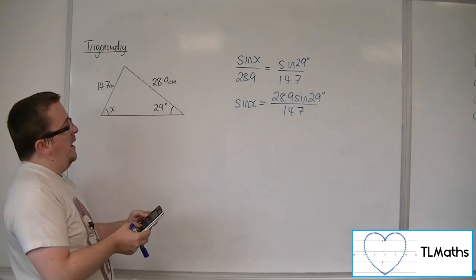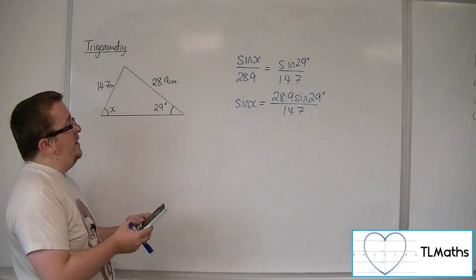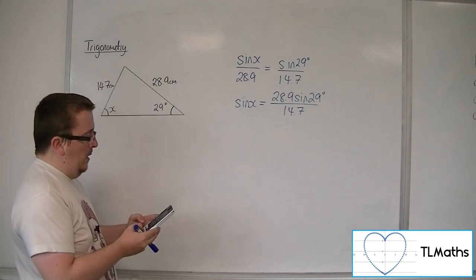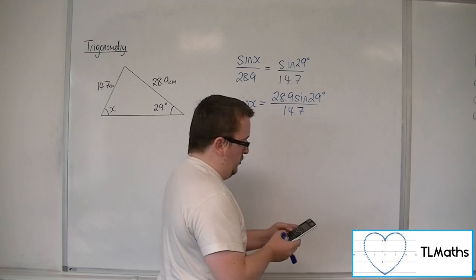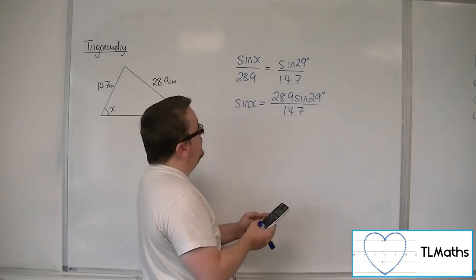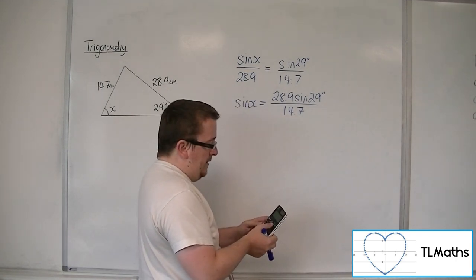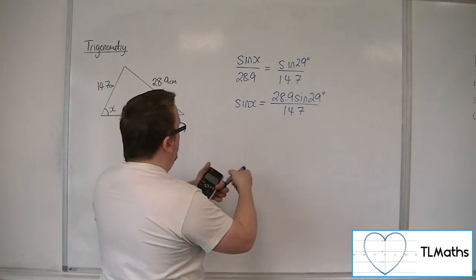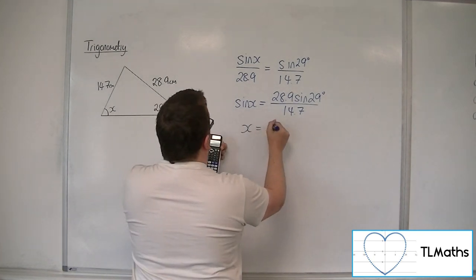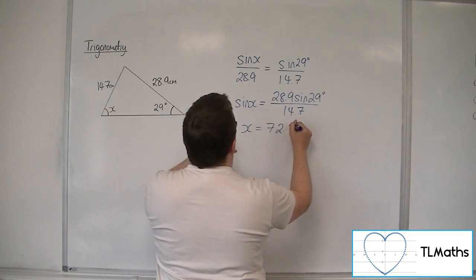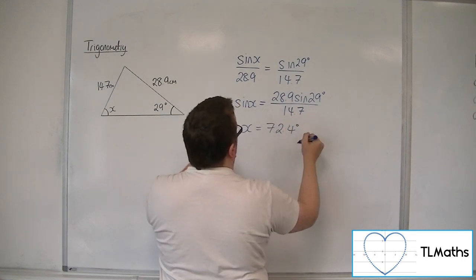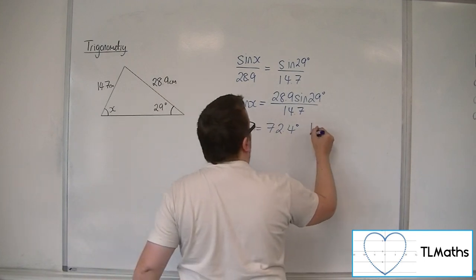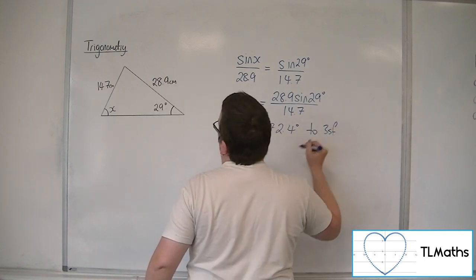So inverse sine of that. Now, make sure I'm actually writing it down correctly, 28.9 times sine of 29 over 14.7 gets me an angle of 72.388, etc. So 72.4 degrees to 3 significant figures.